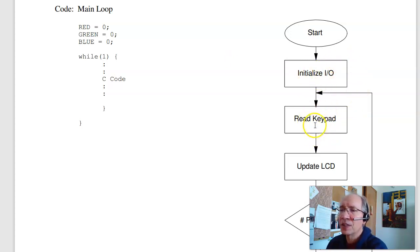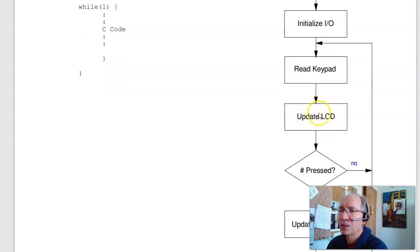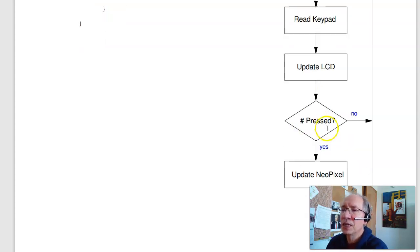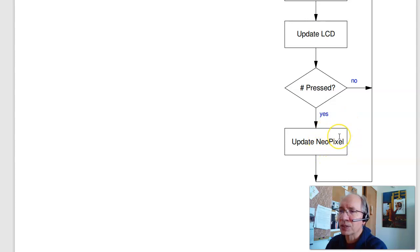I'll then read the keypad. If I have the number 0 through 9, I will read that as just a number. If I hit RB0, I'm going to update the NeoPixel. So as I'm inputting numbers, I update the LCD. And that's where you see the numbers like 1, 2, 3. Hit RB0. I will update the NeoPixels, then repeat.